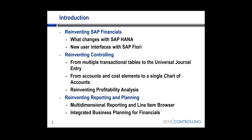Some of you may have been watching what's been going on in the SAP community generally, and some of you will have heard of things like the universal journal entry. The idea with SAP Simple Finance is that we have one huge transactional table, which is basically swallowing what we've previously considered the controlling tables, the material ledger tables, the COPA tables — assuming you're doing account-based COPA — and, of course, the general ledger table. This means a radical way of rethinking what we're doing.